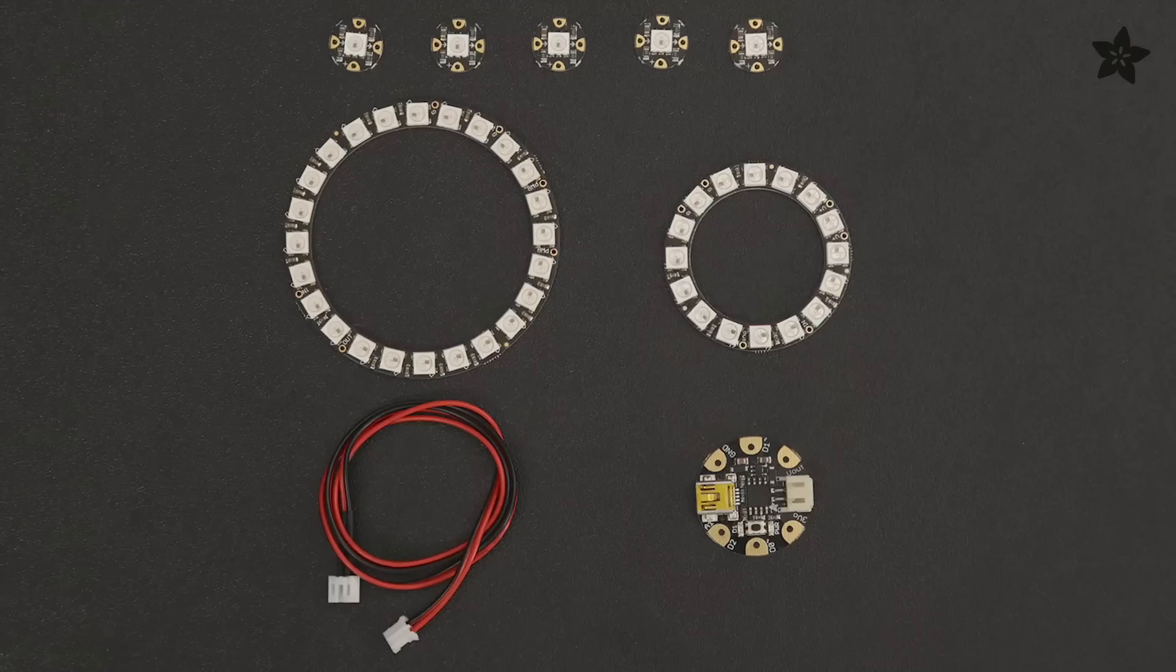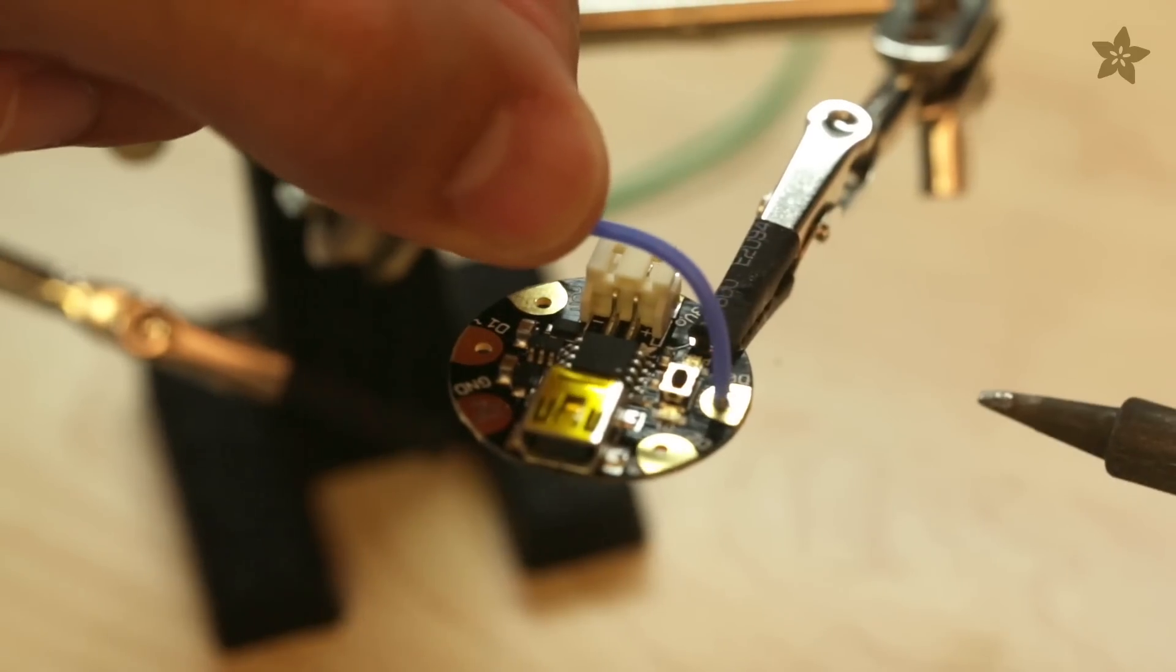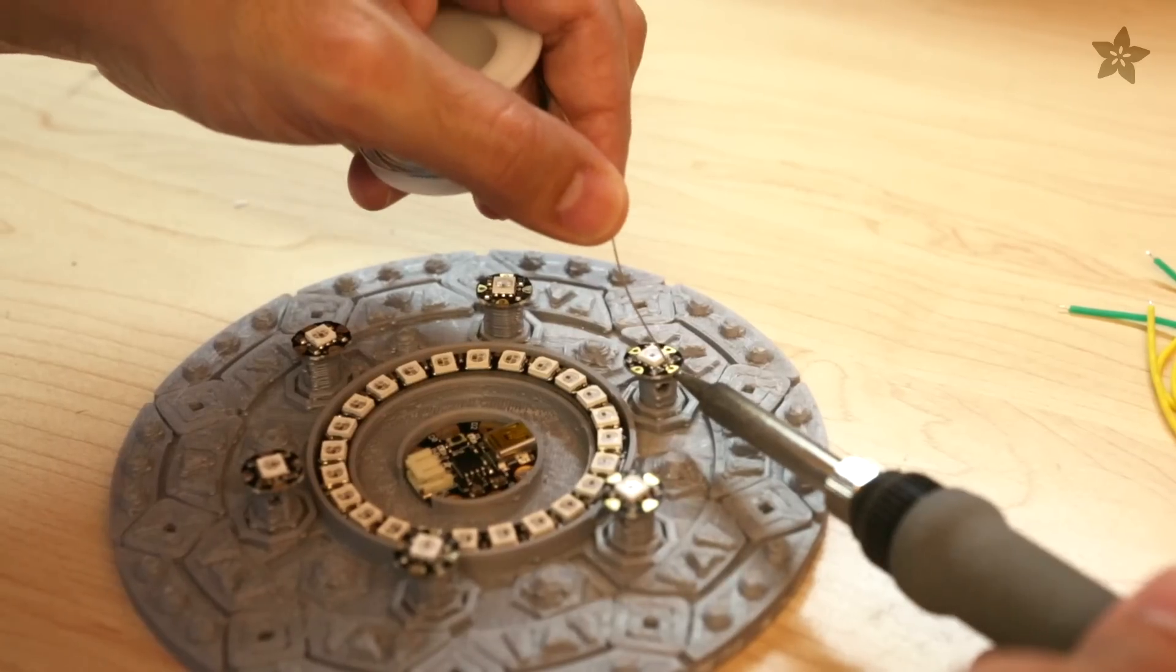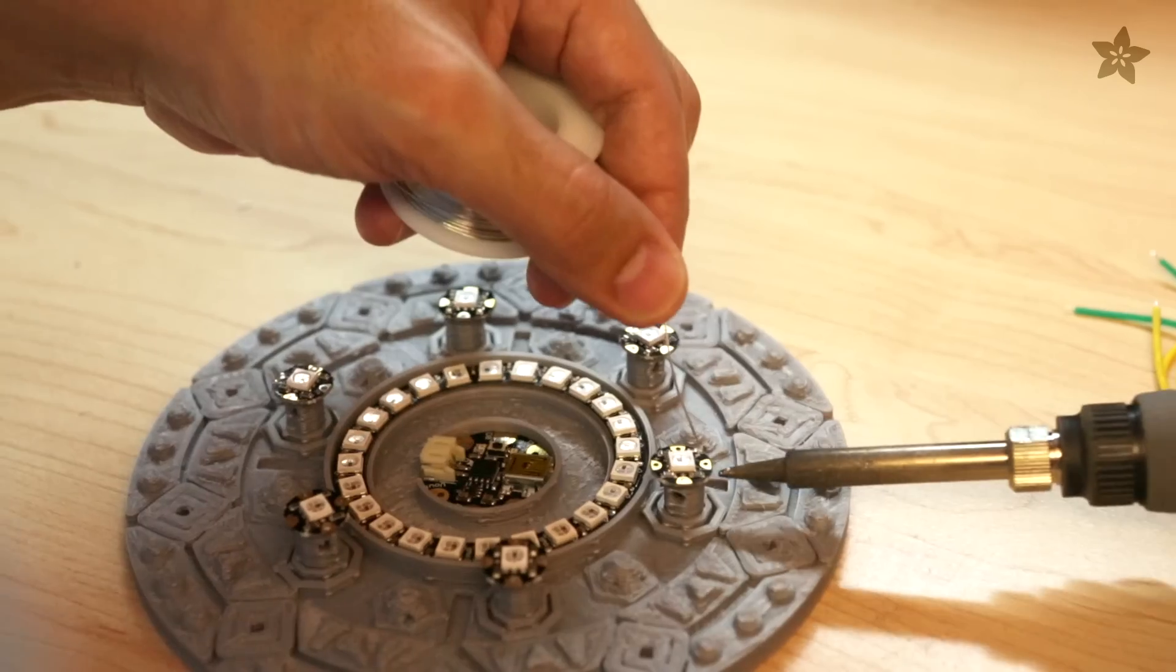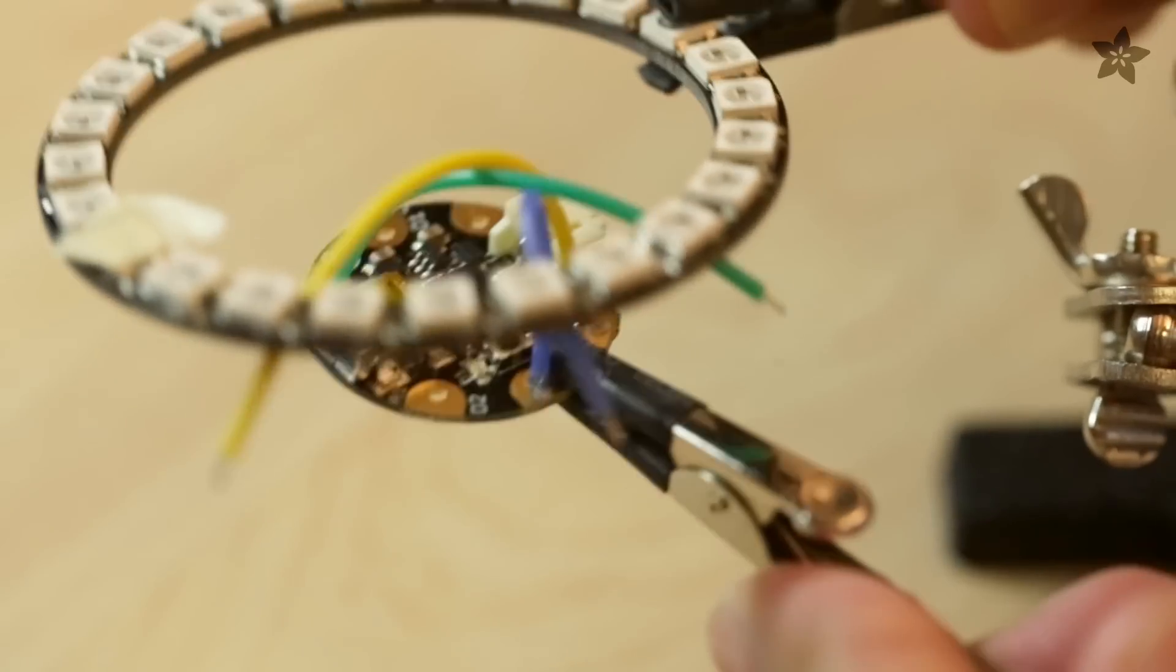So to make the Uni-Beam circuit, we're using two NeoPixel rings, a couple of single NeoPixel LEDs and Gemma, which is an easy to use, bite-sized microcontroller. NeoPixel LEDs are individually addressable and can be connected together in a chain, sharing just one data connection along with power and ground.